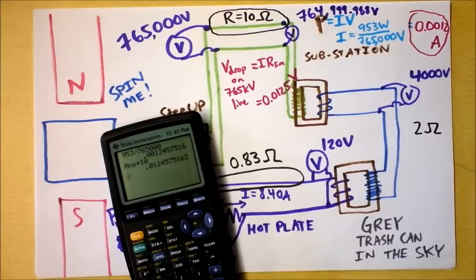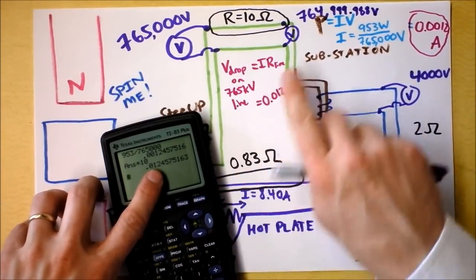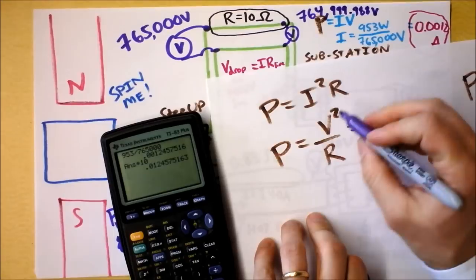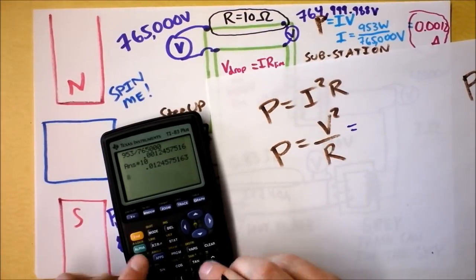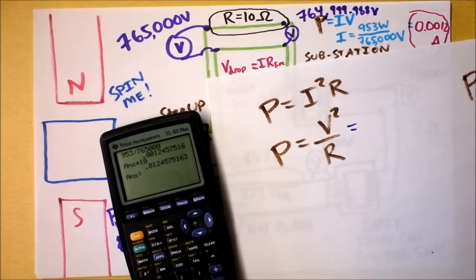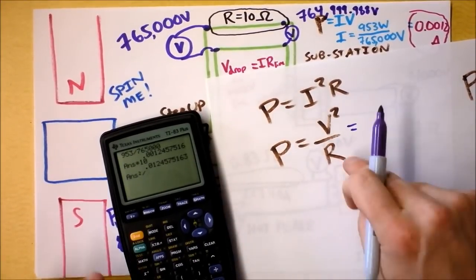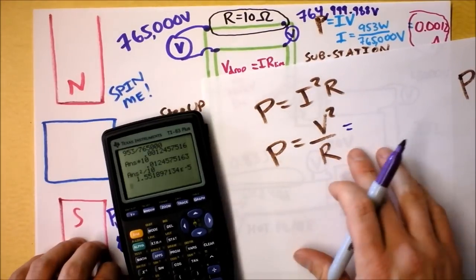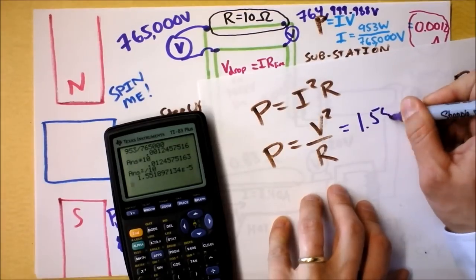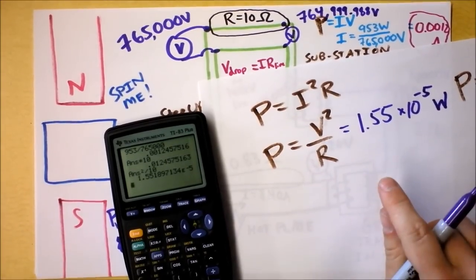So that's the voltage, that one hundredth of a volt, that's the voltage that you need to use if you're going to use this equation. That power loss in that line is that very extremely small voltage squared. I'm taking that very small voltage drop, which is one hundredth of a volt, and I'm going to square it and divide it by the resistance of the line, which is 10 ohms. And the power lost in my line, thank goodness it's really small, 1.55 times 10 to the negative fifth watts. This is very good news.